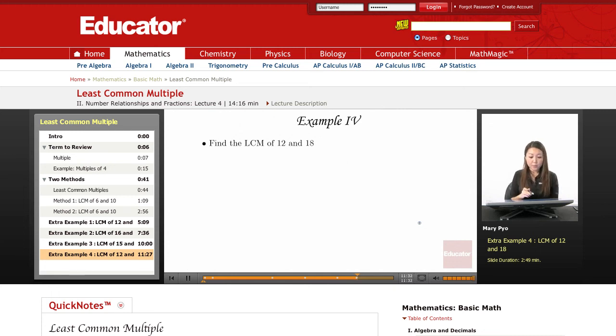Okay, so for this example of 12 and 18, we're going to find the LCM, the least common multiple.